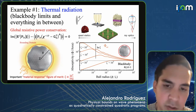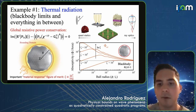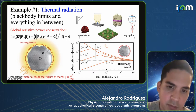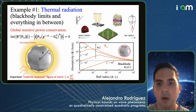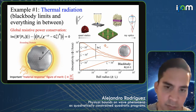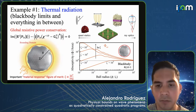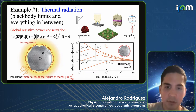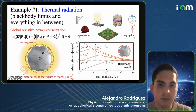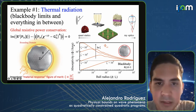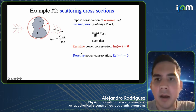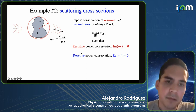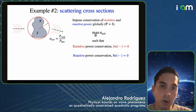This figure of merit doesn't distinguish between different kinds of materials — it only depends on |χ|²/Im(χ) — whereas we know metals and dielectrics behave very differently. The reason is we're not incorporating reactive power conservation into the optimization. Just to give an example of what you get when you impose both reactive and resistive power, I'm going to switch to the problem of maximizing scattering cross-section — the scattered power from an incident wave.